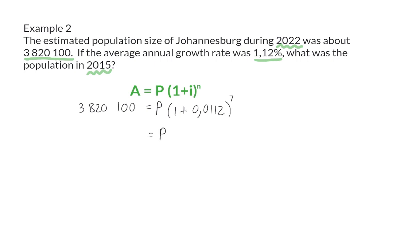And now, to solve P, that present size, I have to divide on the left-hand side by the whole bracket. So, the size of the population in 2015, rounded to the nearest integer, is 3,533,583.